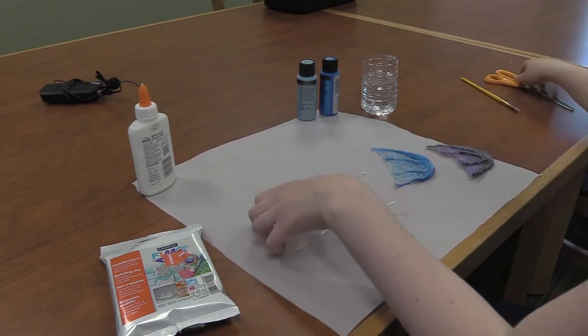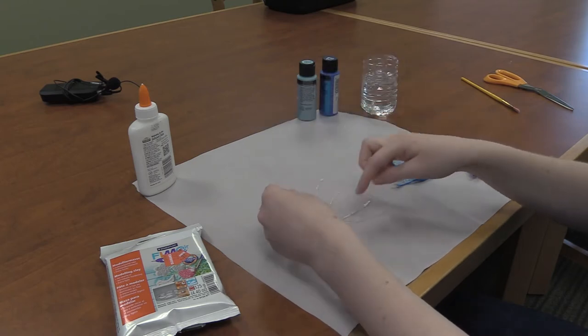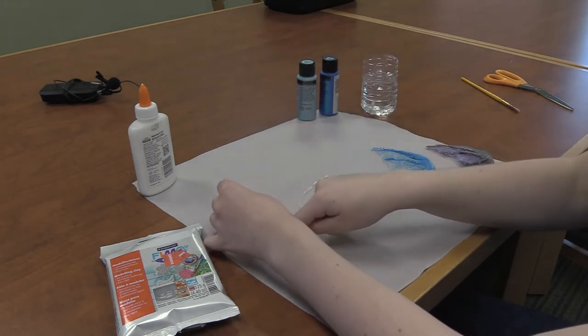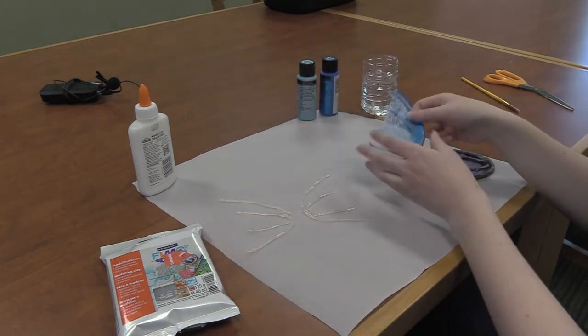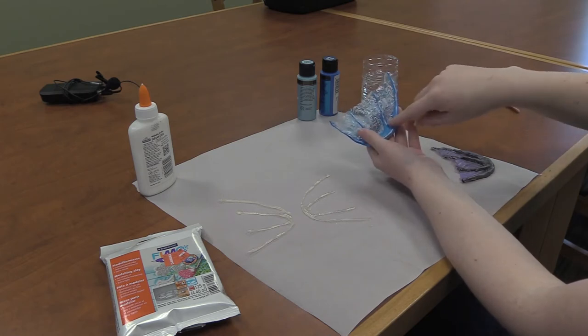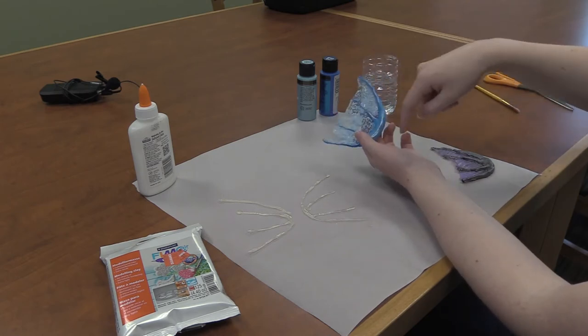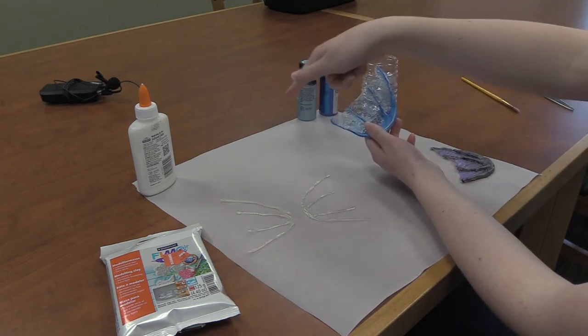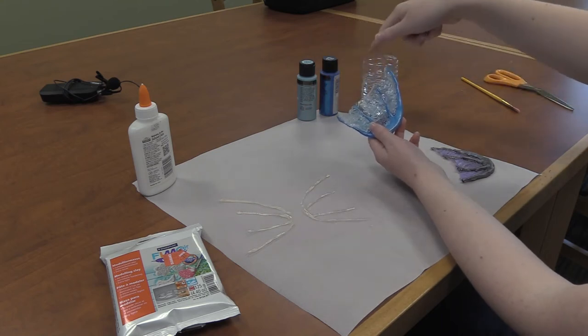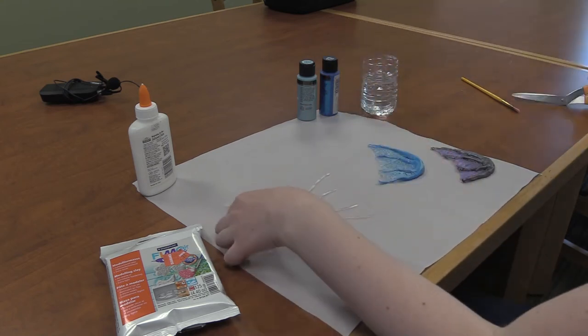When you get ready to start, we're going to take this and then we're going to cut off the excess tulle. We're going to cut off enough to where all the tulle on the inside is still there, but we're cutting off the outside, and we're going to try to curve it inwards. Try to make it look like fins.